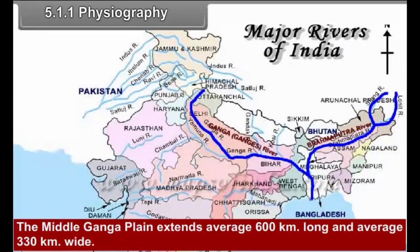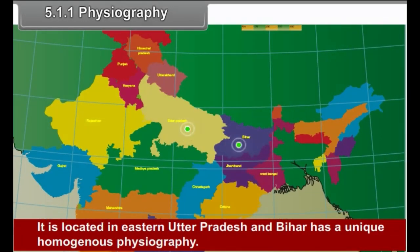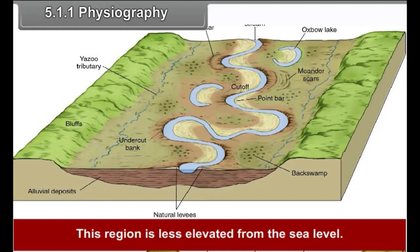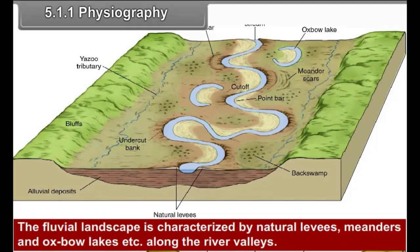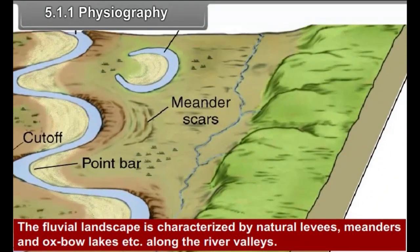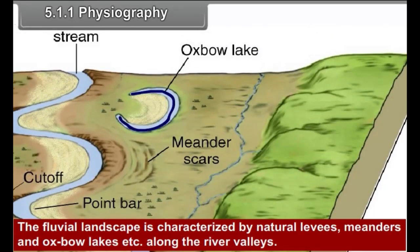The middle Ganga Plain extends approximately 600 km long and 330 km wide. It is located in eastern Uttar Pradesh and Bihar and has a unique homogeneous physiography. This region is less elevated from sea level. The fluvial landscape is characterized by natural levees, meanders and oxbow lakes along the river valleys.